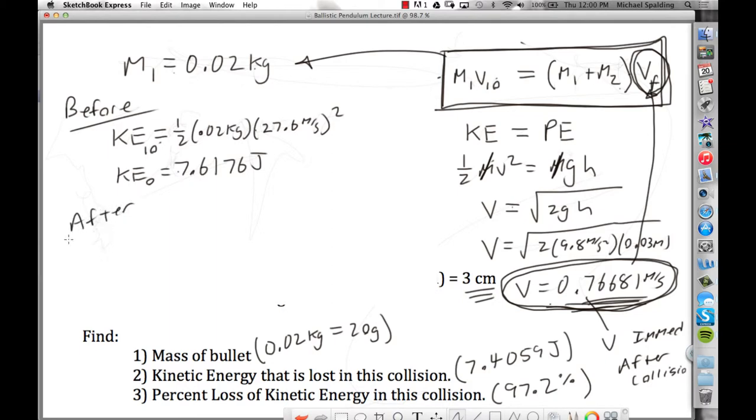Now, after the collision, what has kinetic energy? The bullet-block combo. So here's how you would calculate that. You go one-half. Now make sure you add the masses. It's going to be 0.72. You've got to add the mass of the bullet and the block together.